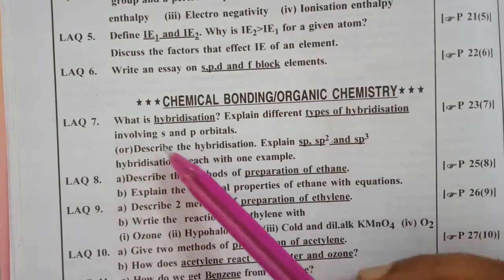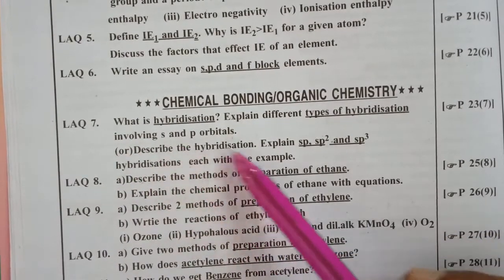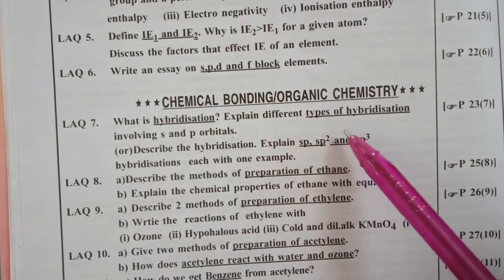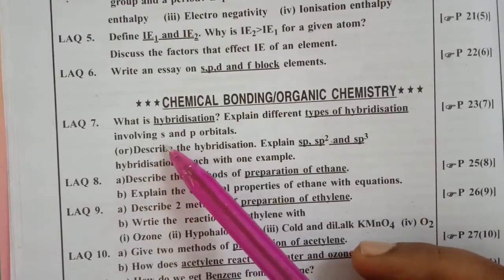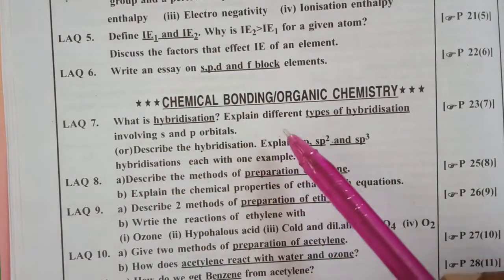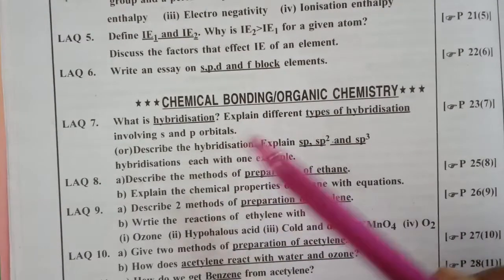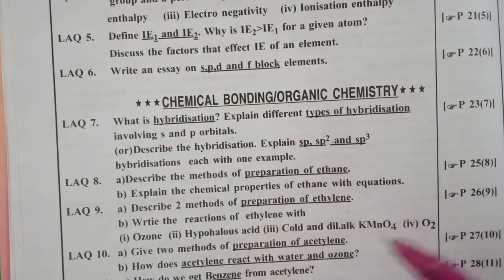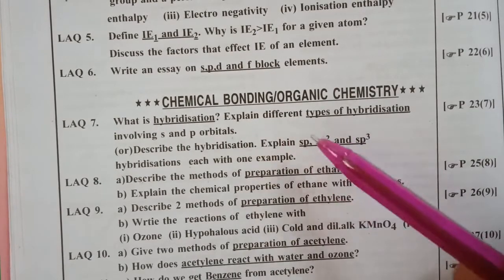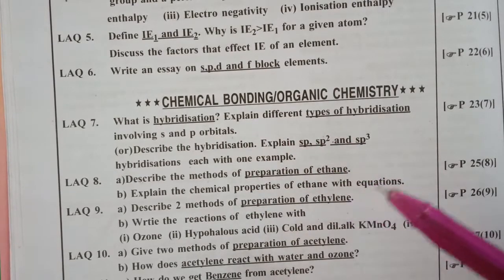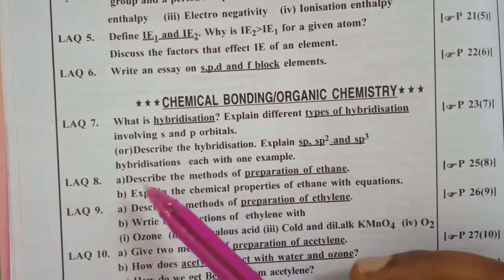First question, what is hybridization? Explain different types of hybridization involving s and p orbitals. Very interesting, chemistry. I like chemistry. When you explain this, you'll get very good marks. It will be very clear.